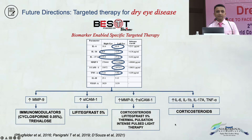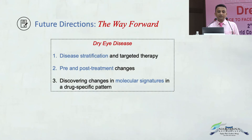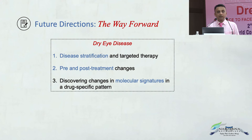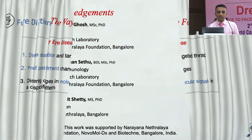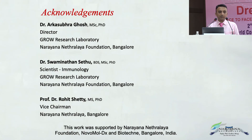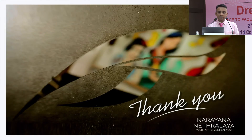The idea is if we are able to detect the root cause, we can treat the root cause. The future would be to have a disease stratification based on these cytokine levels, and not just based on gross level of symptoms, signs, and imaging. We can have pre- and post-treatment changes and follow these cases much more easily. We can possibly track changes in molecular patterns and have very specific treatment, which is going to be a game changer. I would like to acknowledge these people in our institute, and thank you very much.